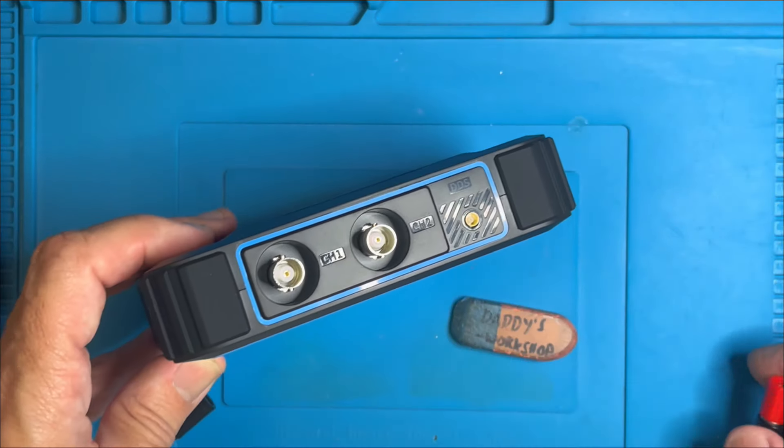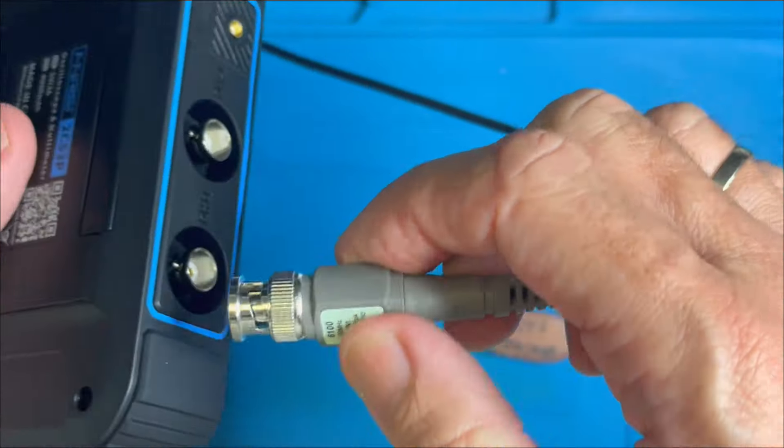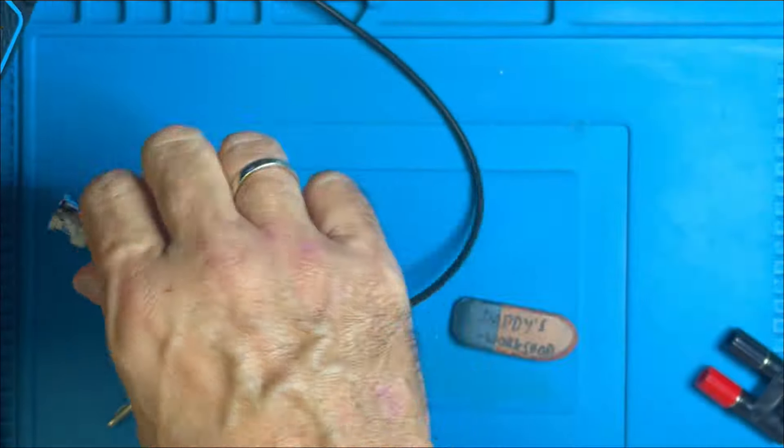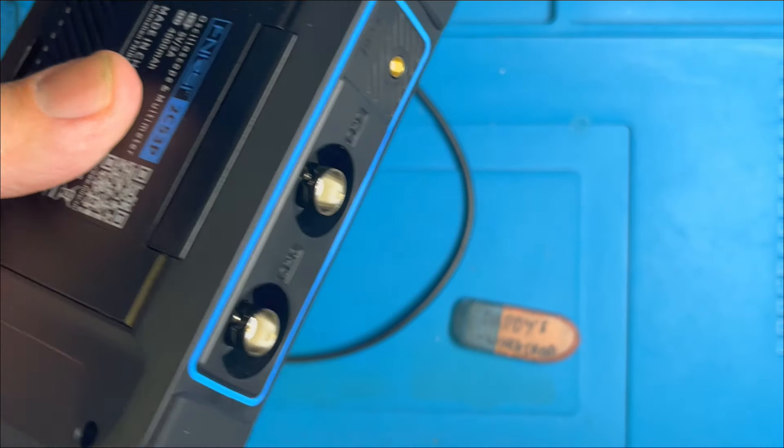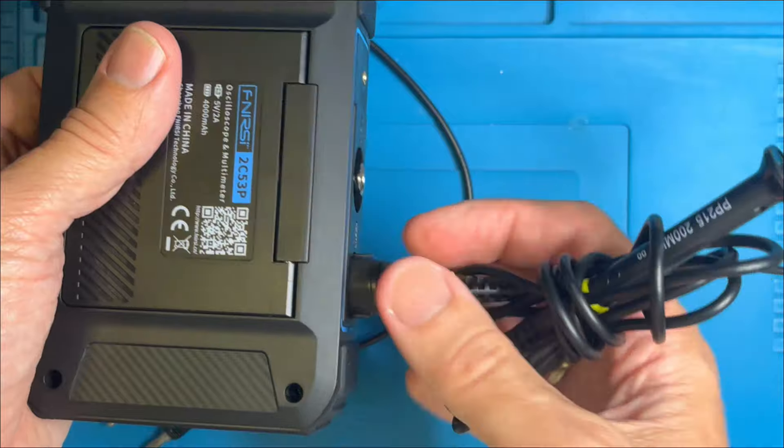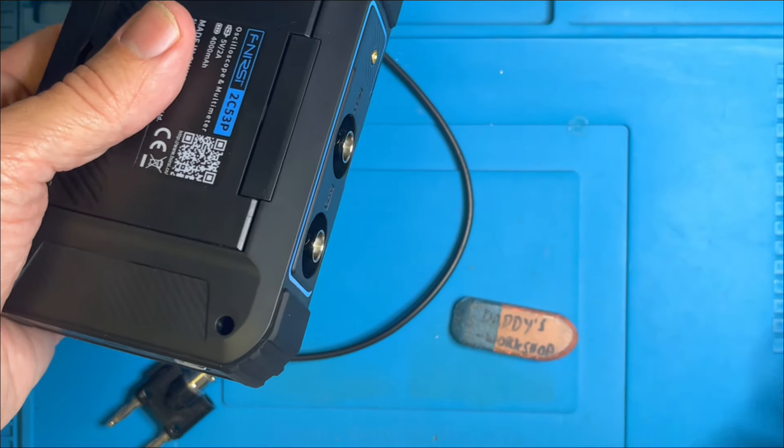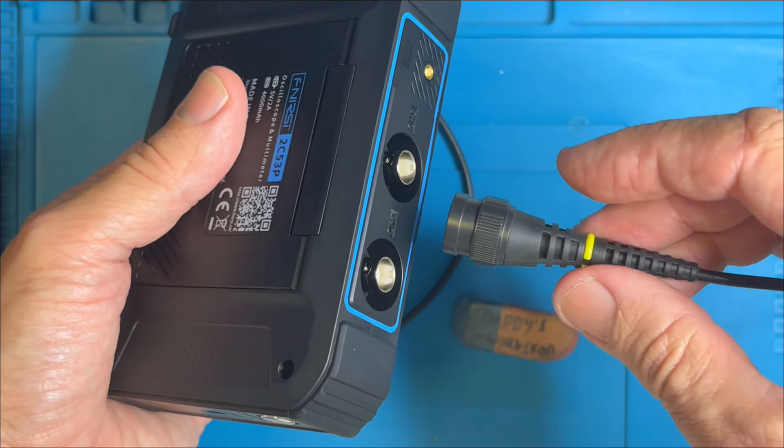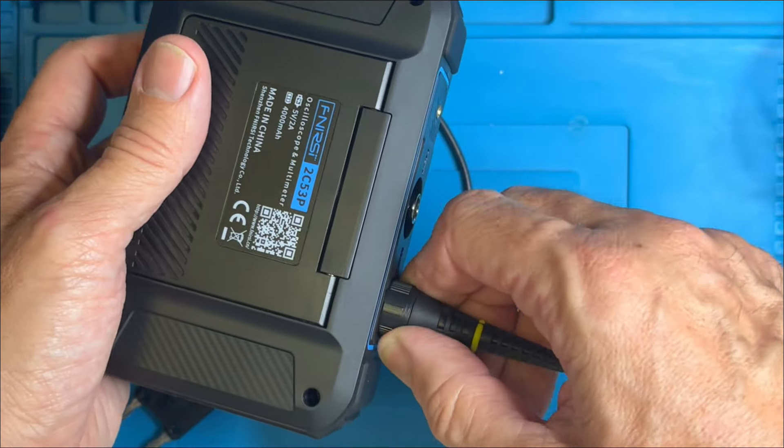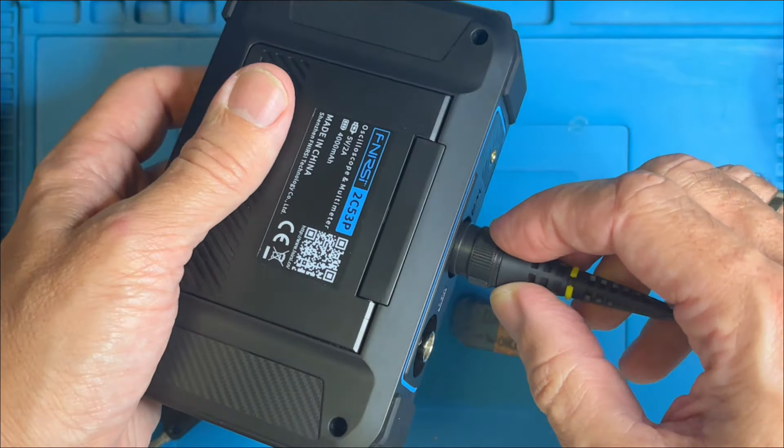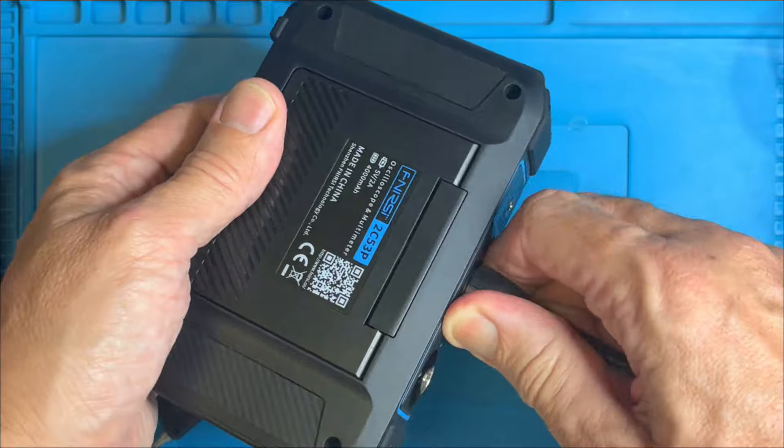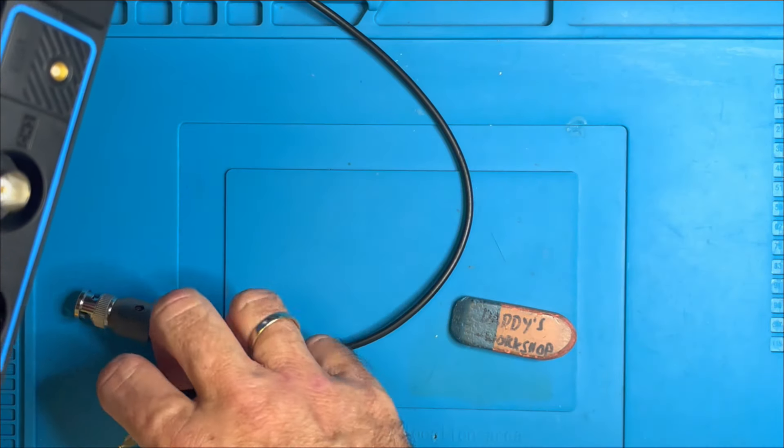Let's take a look at the spacing on the multimeter jacks and what types of banana jacks it can accept. Remember the 2C23T couldn't accept insulated BNC jacks. I hope it's not the case with this one. Let's get some of my insulated probes. Yay! Look at that! Oh fantastic! Let's try another one - a Tektronix probe. Come on, you can do it. Yes! Fantastic! Thank you FNIRSI! That's brilliant, that's great. Thank goodness for that.